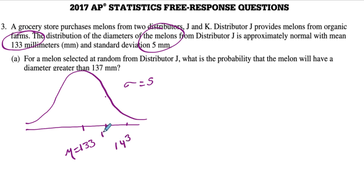This would be 143, 138. Same thing on the other side, try our best here, 128 and 123. So what we want to know is the probability that the melon, we're going to select one melon, and that the diameter is greater than 137. So 137 is approximately right here, a little bit less than 138. And we want to know the probability that we are to the right of 137.